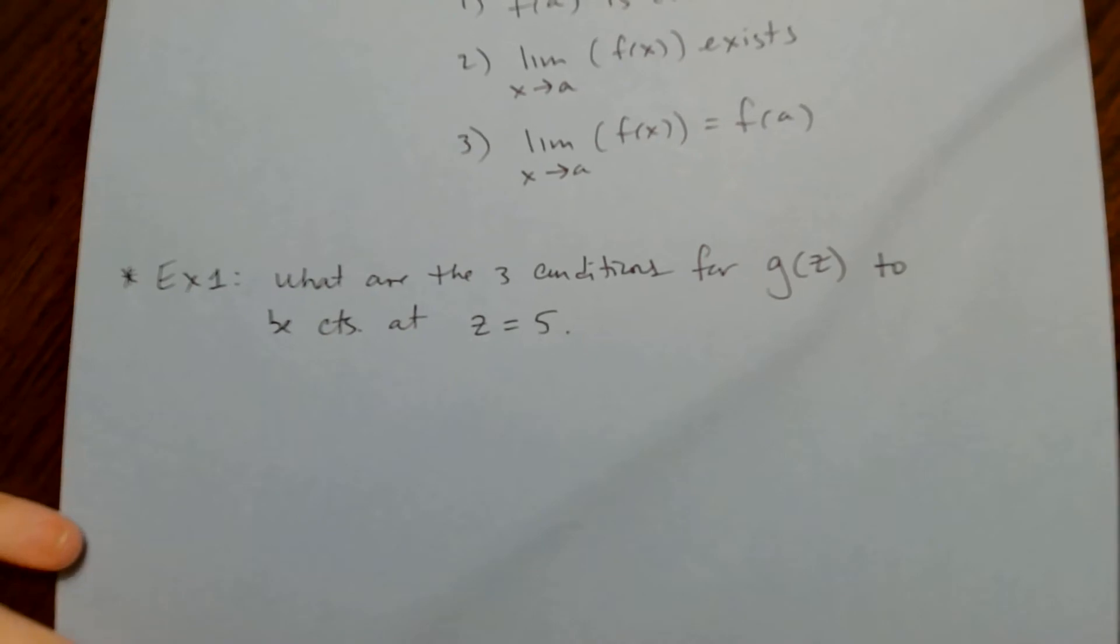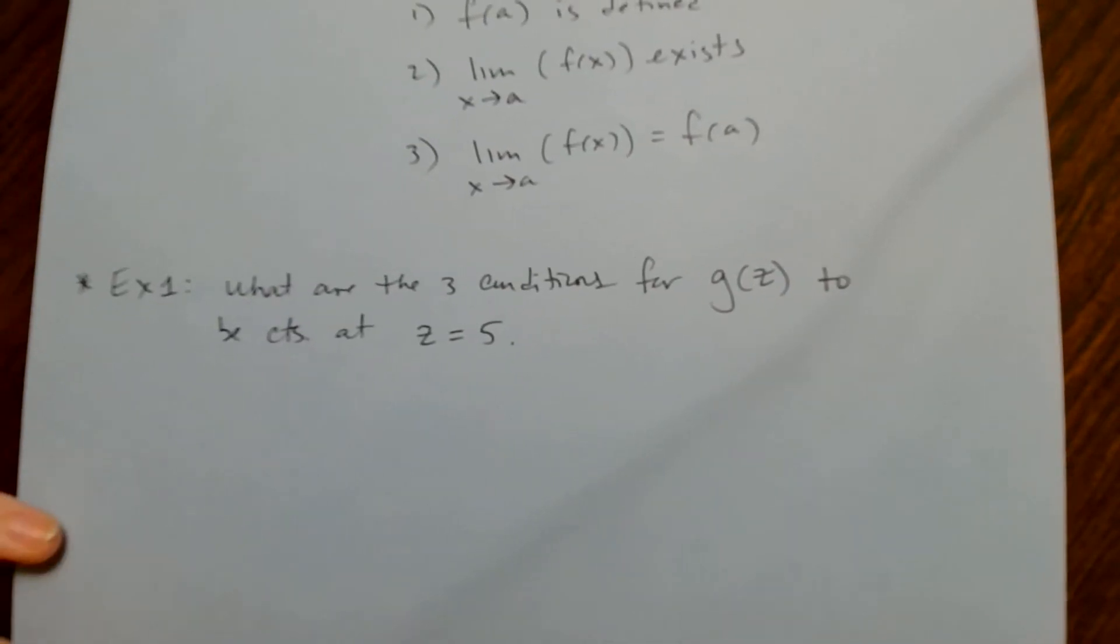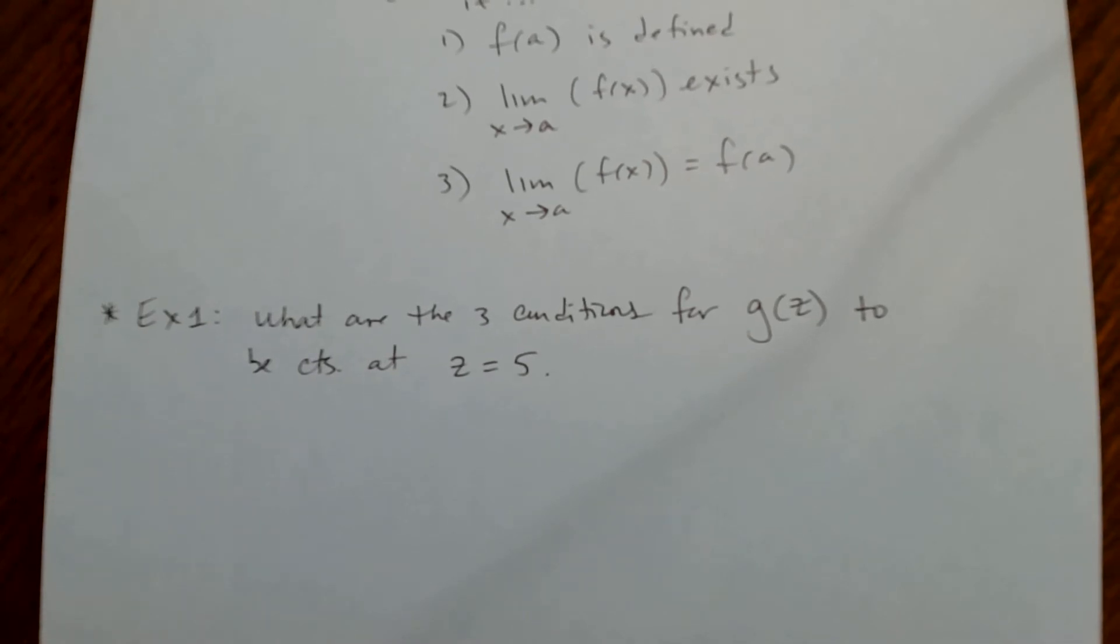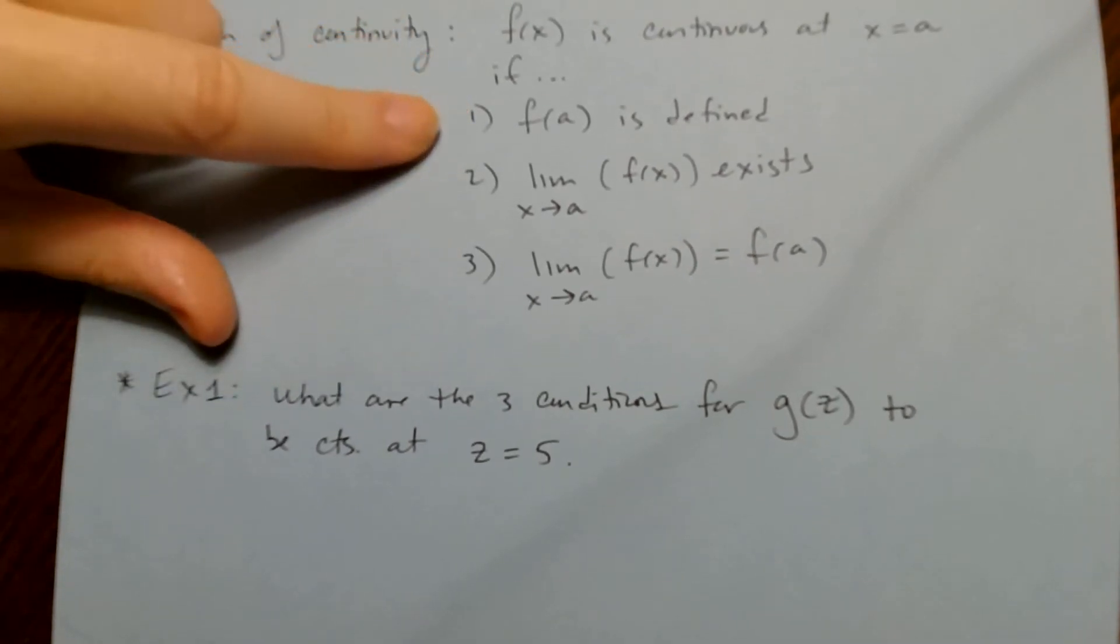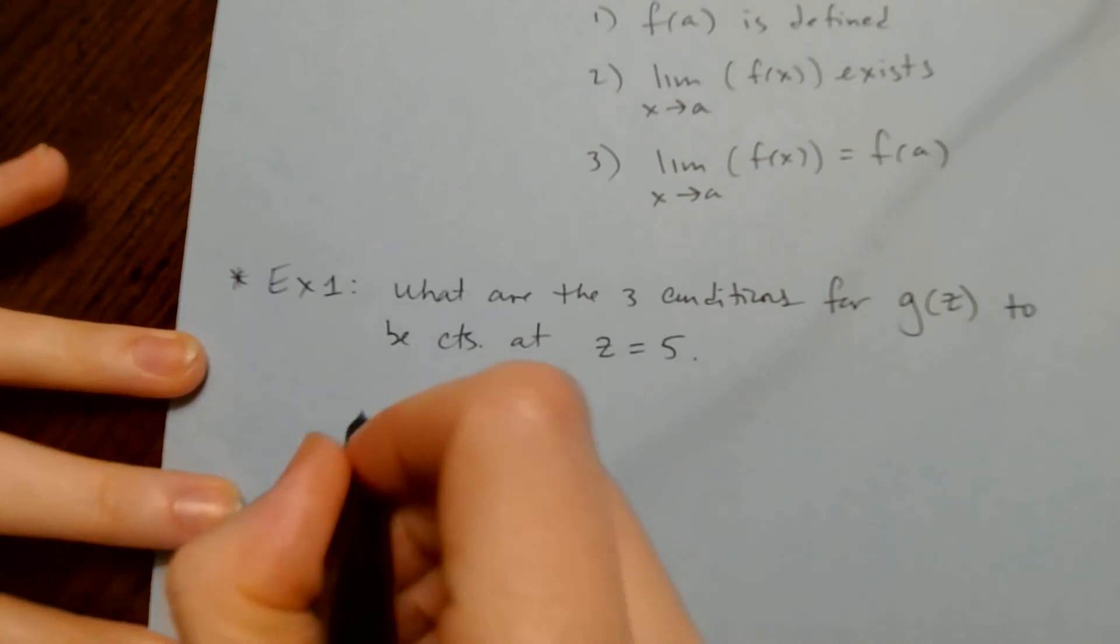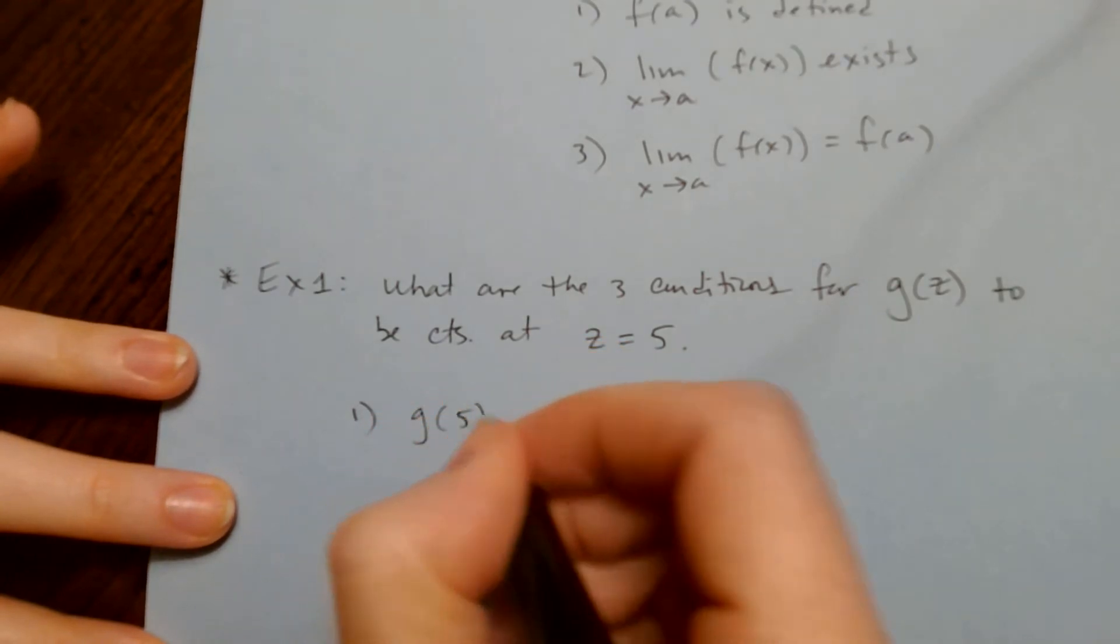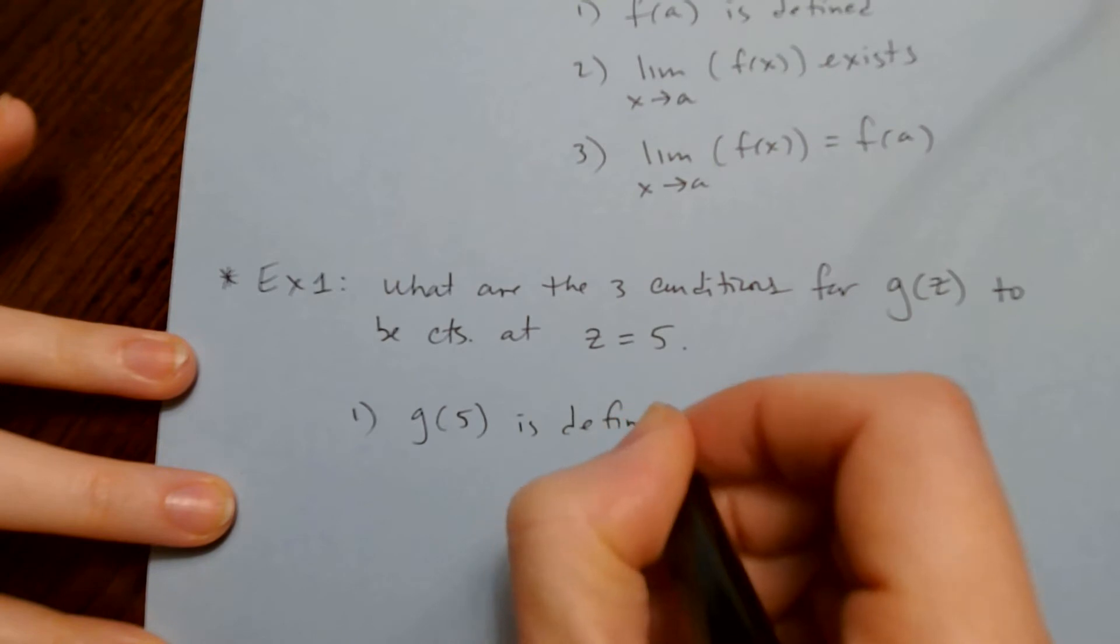What are the three conditions for g(z) to be continuous at z = 5? These exercises help you have fluency and memorize these three conditions. Number one: g(5) is defined.